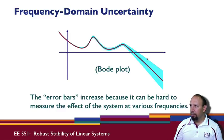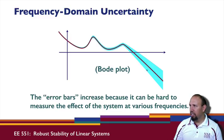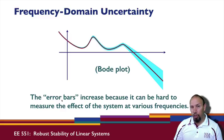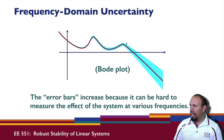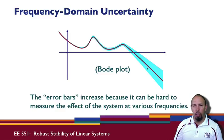We apply an input at a frequency and there is uncertainty here, so we have error bars in our measurement. This is an important aspect of error bars when you do an experiment. The error bars may increase because it's hard to measure the effect of the system at various frequencies. Some of this may be associated with the resolution of your measurement devices, or with unmodeled dynamics.